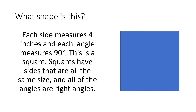Here is a sample argument. The question: what shape is this? Each side measures four inches and each angle measures 90 degrees on the shape. This is a square. Squares have sides that are all the same size and all of the angles are right angles.